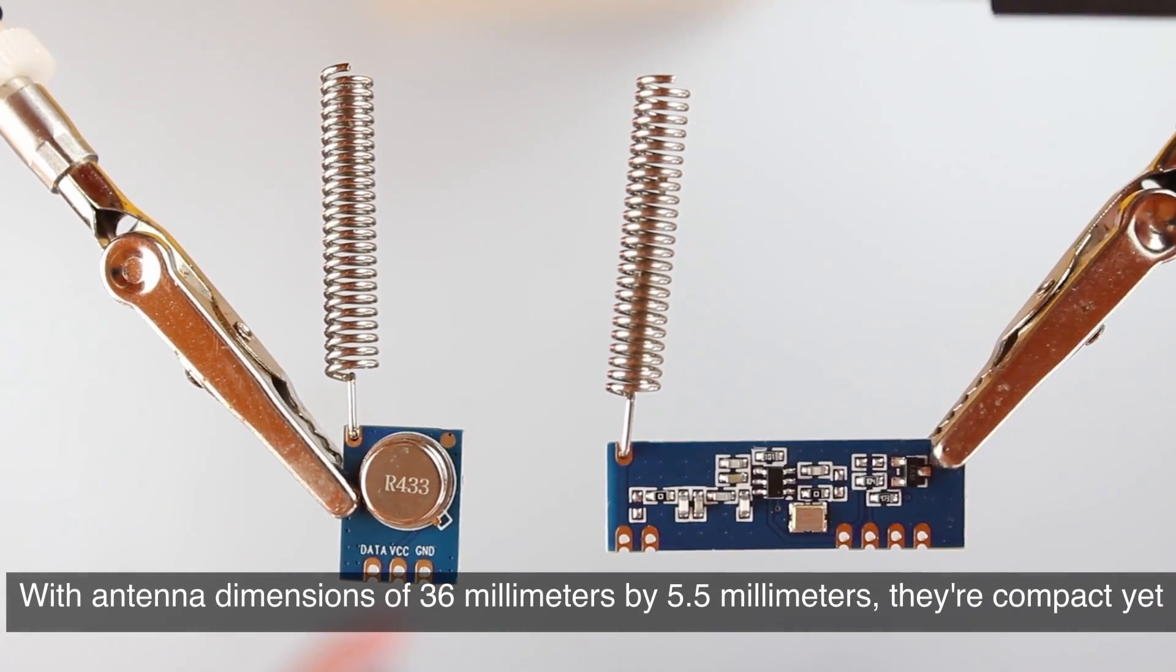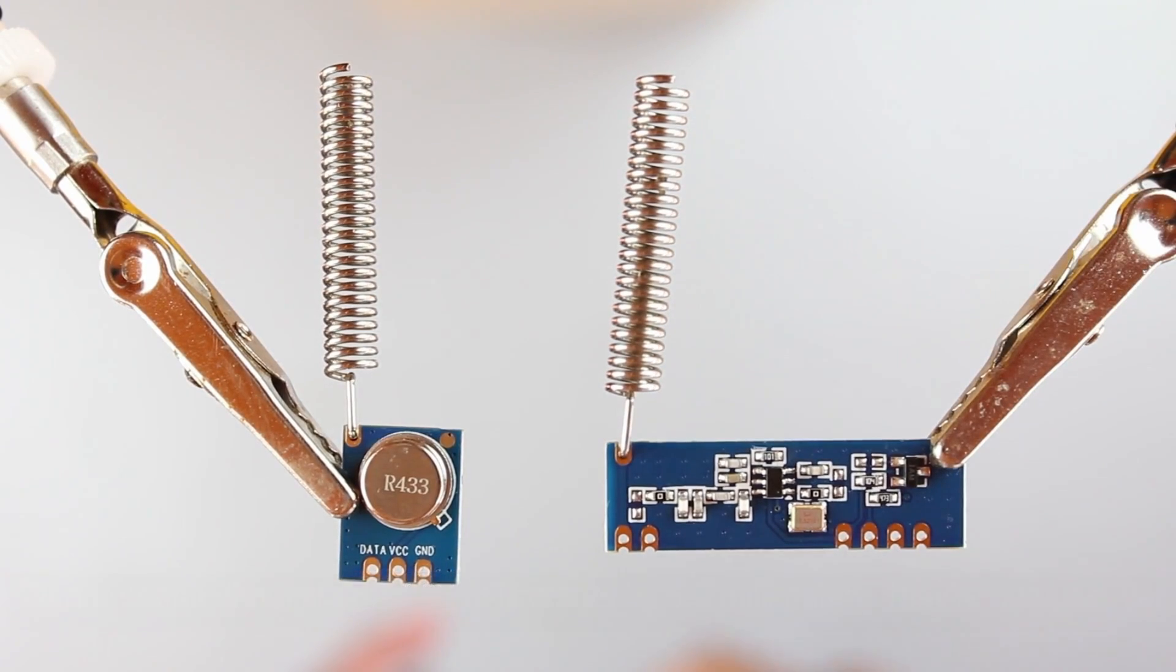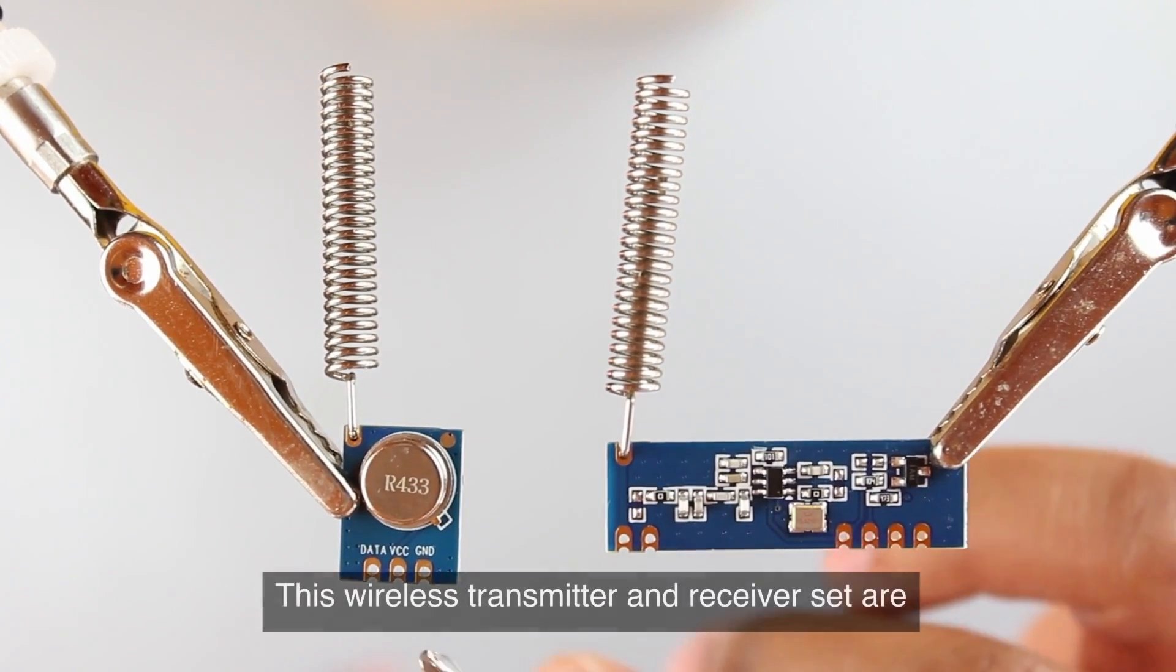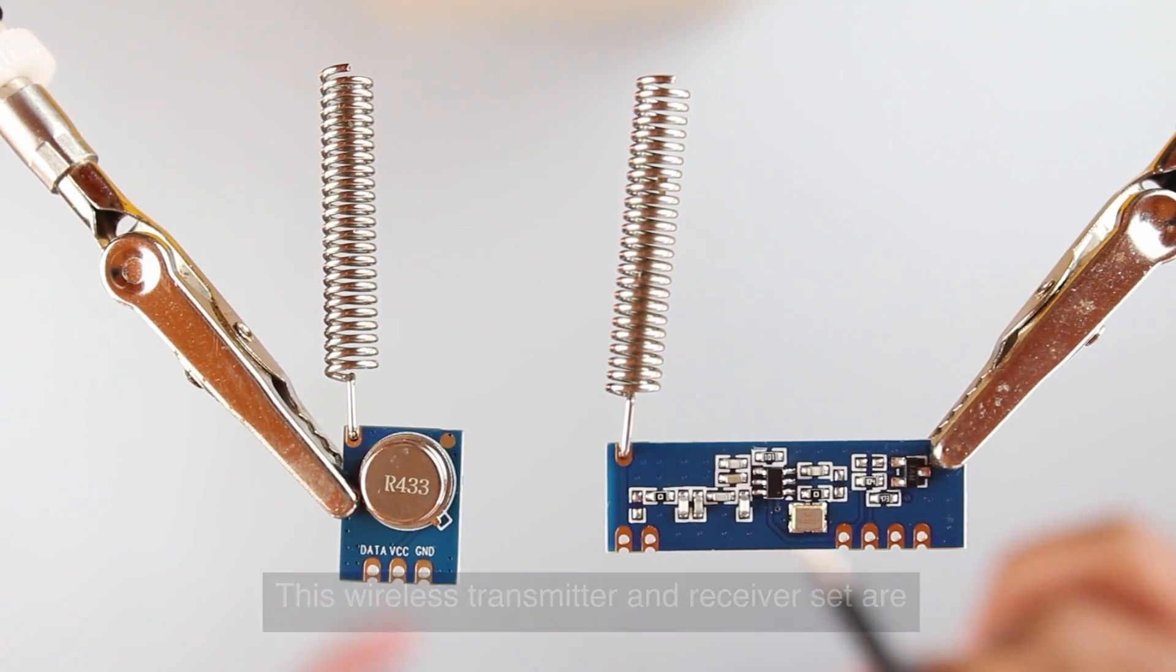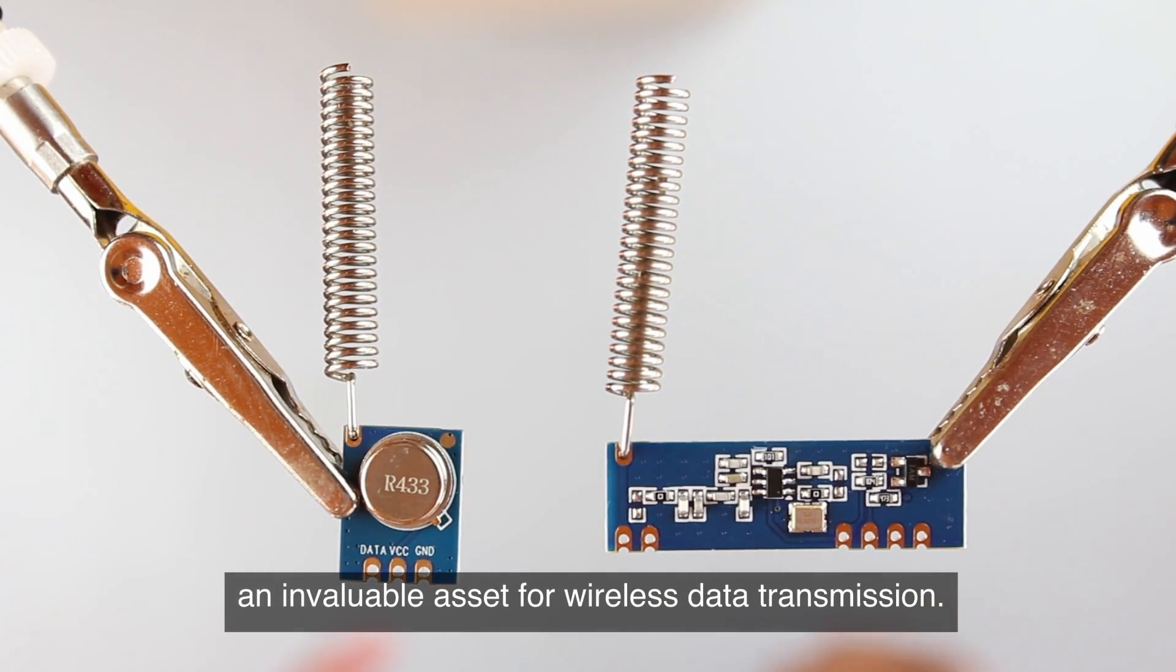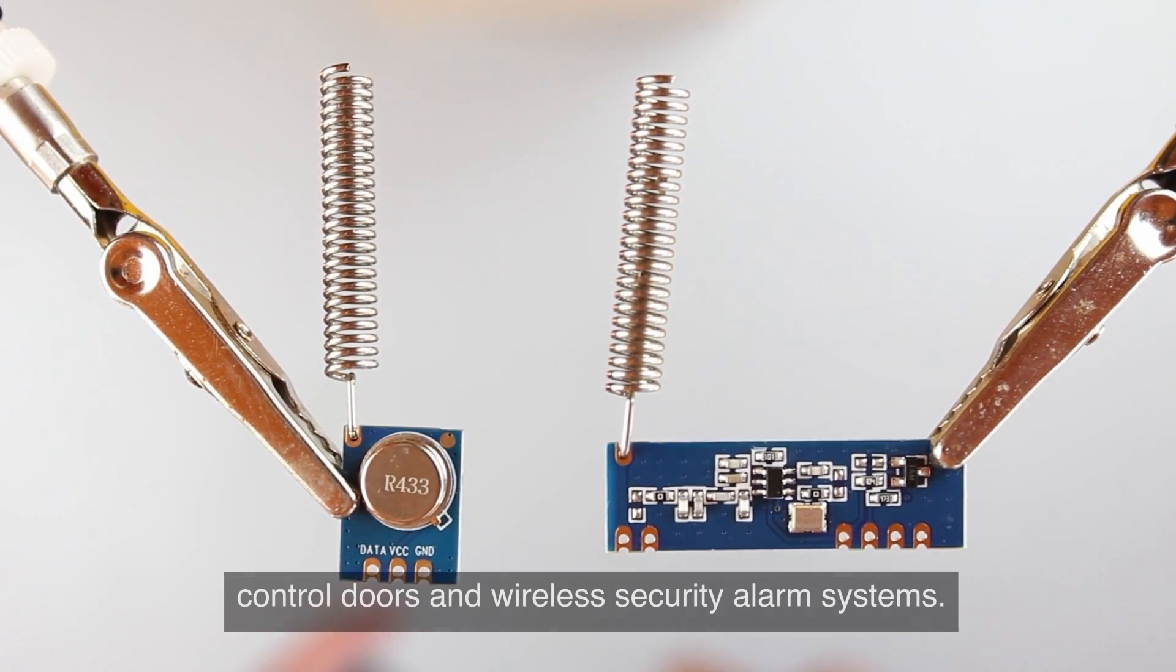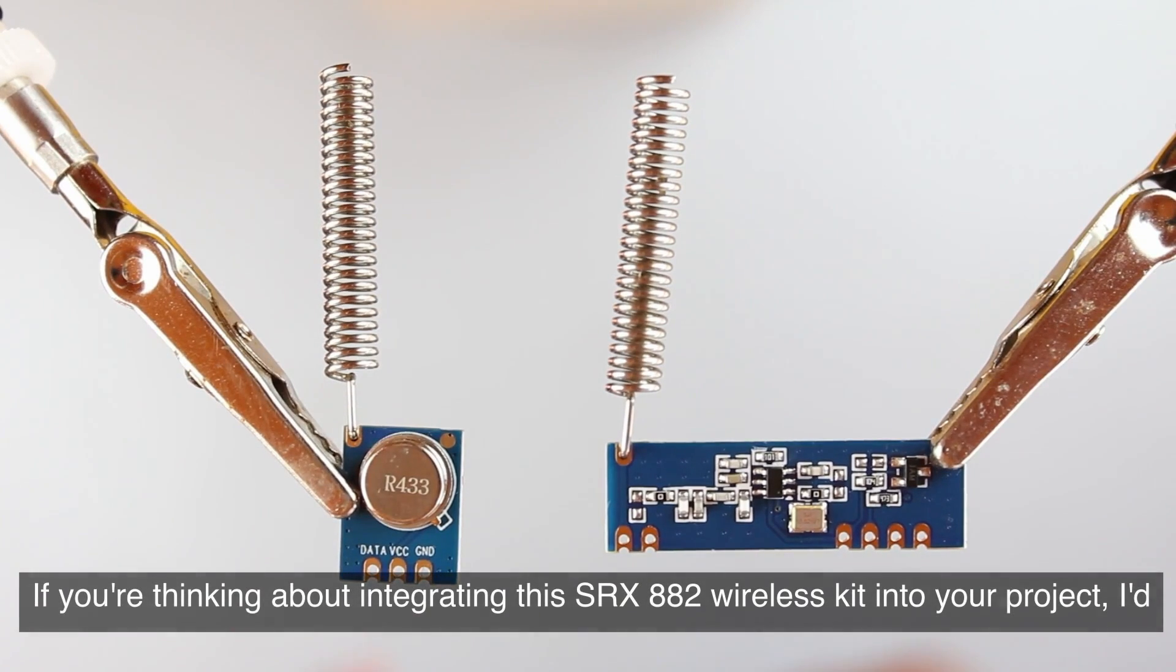With antenna dimensions of 36 millimeters by 5.5 millimeters, they're compact yet highly effective in facilitating wireless communication. This wireless transmitter and receiver set are an invaluable asset for wireless data transmission, wireless control systems, and a variety of other applications, including remote control doors and wireless security alarm systems.